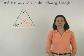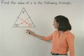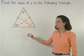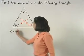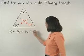Now to find the value of x, remember that the sum of the measures of the angles of a triangle is 180 degrees. So we can set up the equation x plus 70 plus 70 equals 180.